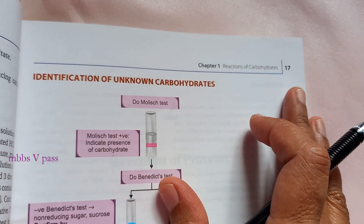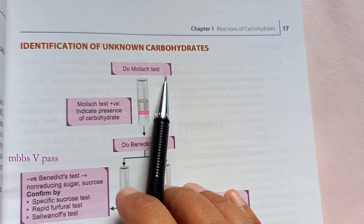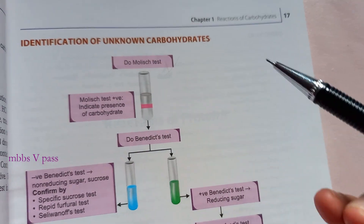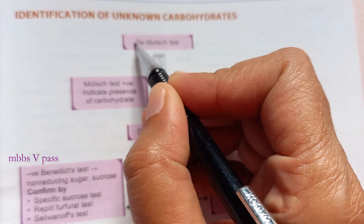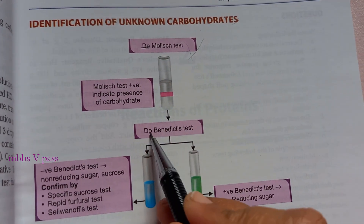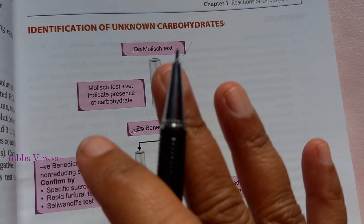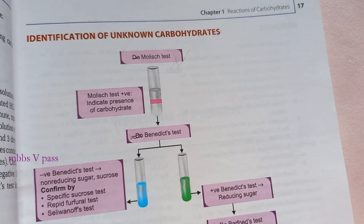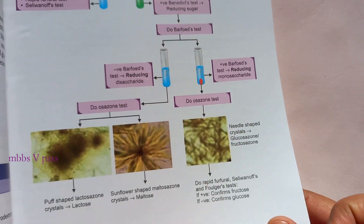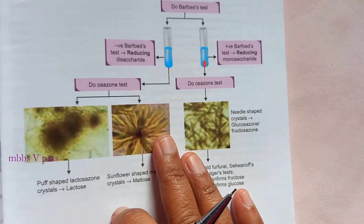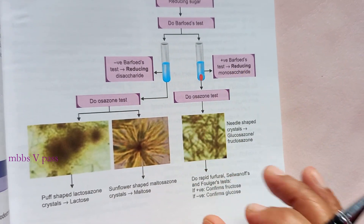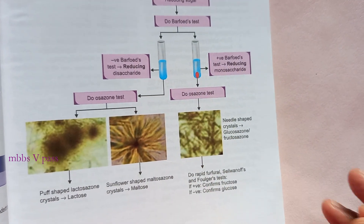Here's a flow chart on how to identify unknown carbohydrates. Are you focusing? First you do the Molisch test — you know, this 'do' is very irritating, it should just be 'Molisch test.' Then Benedict's test. Finally, they are doing Osazone to find out which disaccharide or monosaccharide it is. Focus.